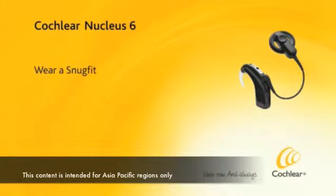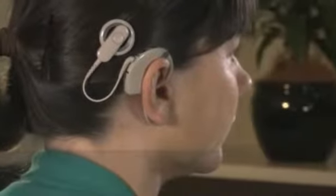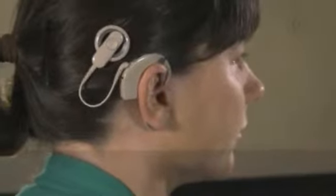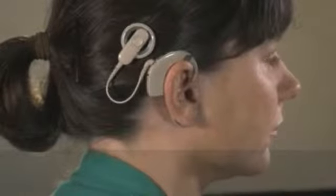Wear a SnugFit. The Cochlear Nucleus CP900 Series SnugFit holds your sound processor more securely in place than an earhook alone.